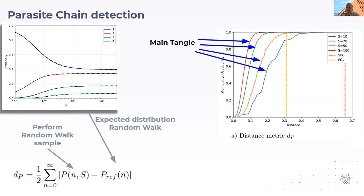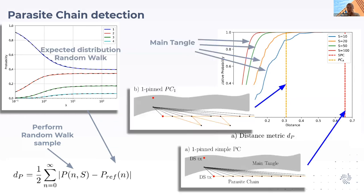You have different distances depending on the sample size S. For example, for sample size S equals 10, this distance can vary a lot, but for a higher sample rate like 100, you get a very close distance already. These were all taken from the main Tangle.